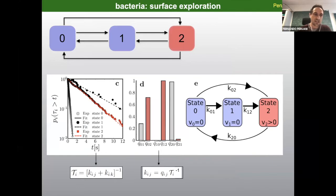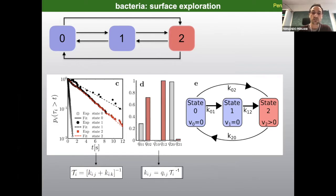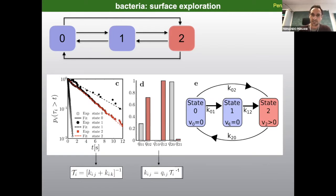Having a definition of each state, you can compute for how long the bacterium is in each of states zero, one, and two — shown here as survival curves. You can also compute the probability of going from zero to one, zero to two, one to zero, one to two, and so on. Knowing both the dwell times and the transition probabilities allows you to compute all transition rates in the Markov chain, and you obtain a circuit with four non-zero transitions.